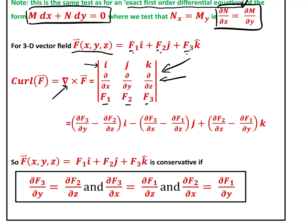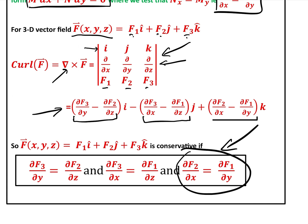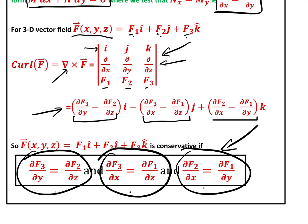If that determinant evaluates to zero, then we know that the vector field f is conservative. The expansion of that determinant shows that if each component is zero, the whole curl will be zero. This gives a formula very similar to the 2D case: df2/dx = df1/dy is one-third of the 3D condition, and the other two are the permutations of 1, 2, and 3. All three of those equalities must hold for the field to be conservative.